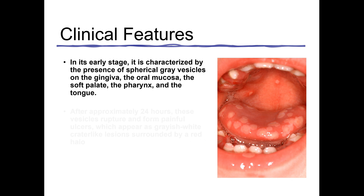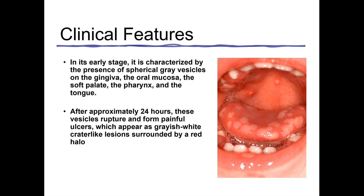After approximately 24 hours, these vesicles rupture and form ulcers that are grayish-white in color. These ulcers are painful for the patient. The most characteristic feature of the ulcer is a gray central lesion surrounded by a red margin — essentially a red halo — which is a significant finding in patients suffering from acute herpetic gingivostomatitis.